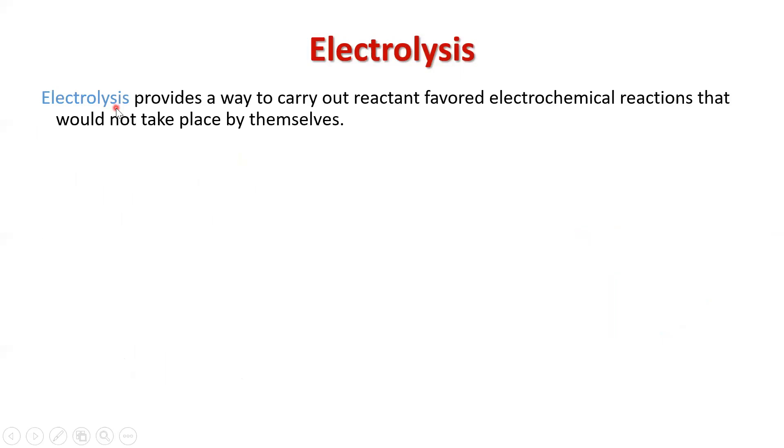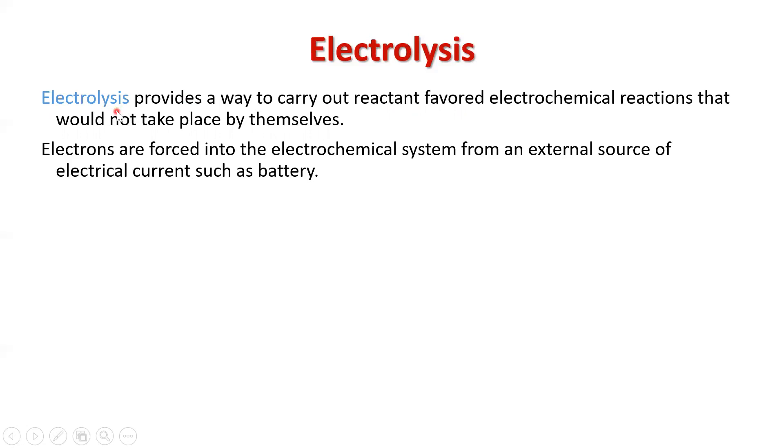Electrolysis is a process that causes a non-spontaneous reaction or reaction that's reactant favored to occur. And the way that electrolysis takes place is we force the electrochemical cell to work in the reverse direction in the non-spontaneous direction by adding in an external energy source. It's used in purifying metals. It's used in electroplating.